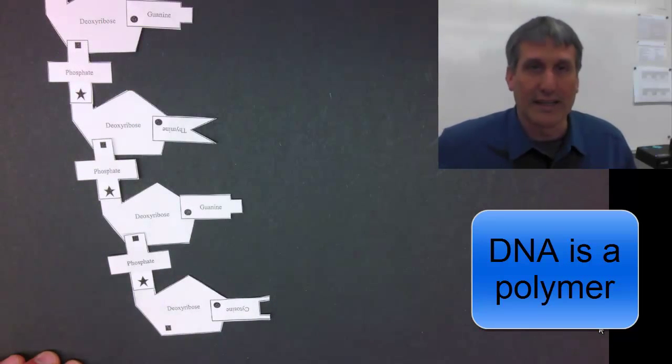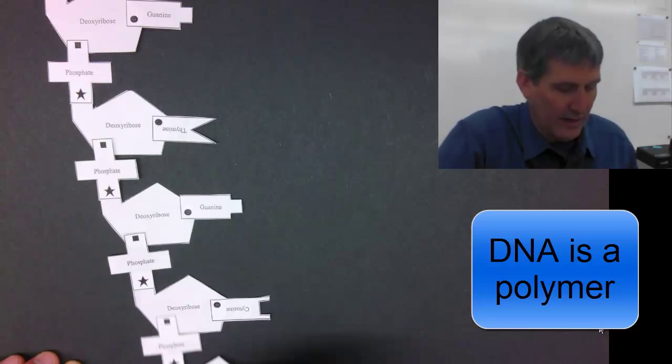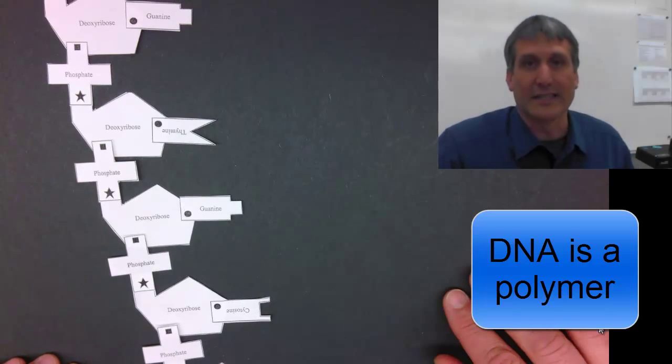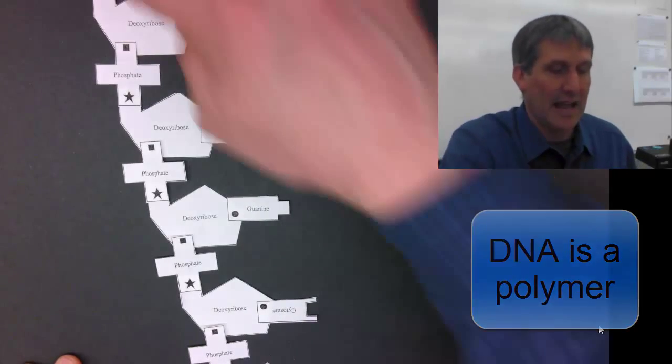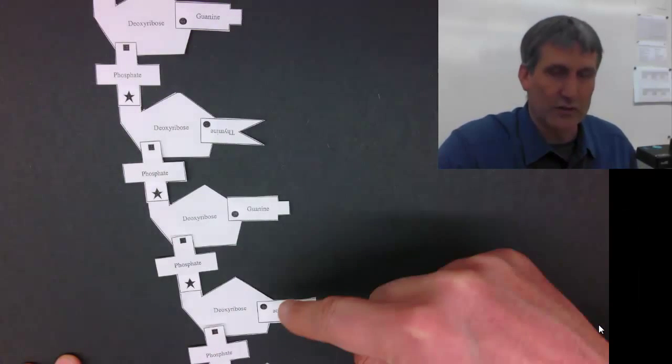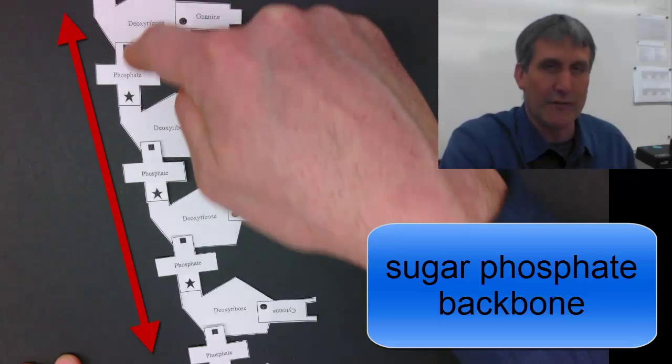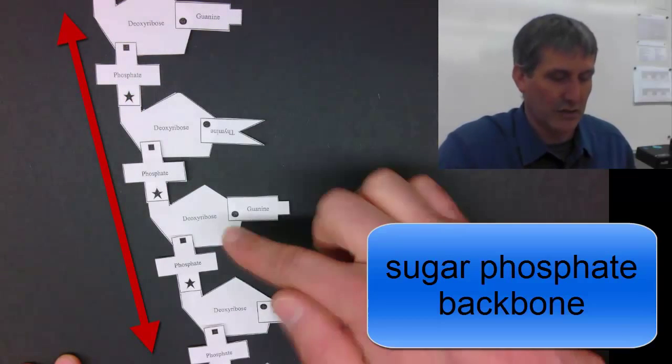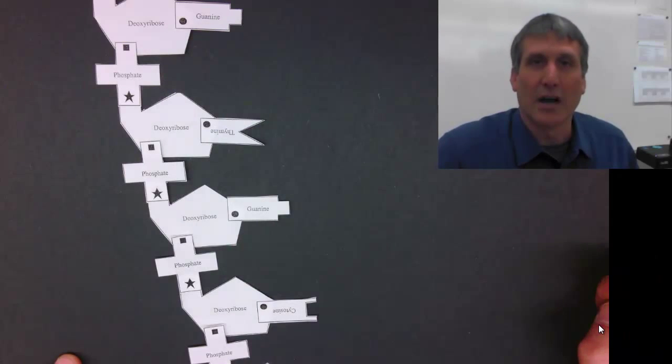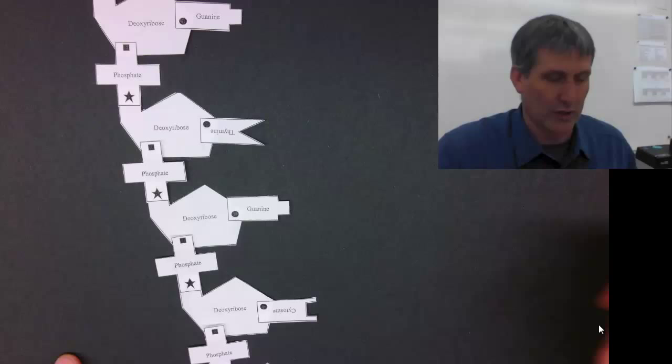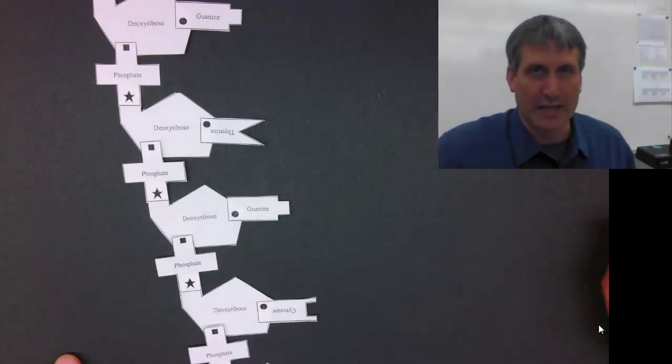And you'll very quickly see that you can repeat this process as many times as necessary. And you end up with a single strand of DNA with a sugar-phosphate backbone with the bases coming off of the deoxyribose sugar on one side.